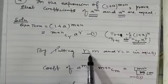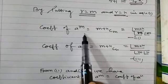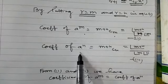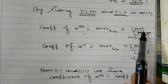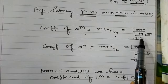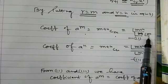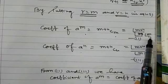By putting r equal to m and r equal to n in the general term equation, we have: coefficient of a to the power m is equal to (m+n)Cm, which gives factorial(m+n) divided by factorial(n) and factorial(n). Coefficient of a to the power m is (m+n)Cm, giving factorial(m+n) divided by factorial(n) and factorial(n).